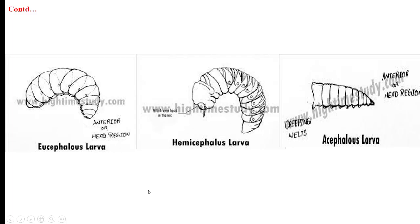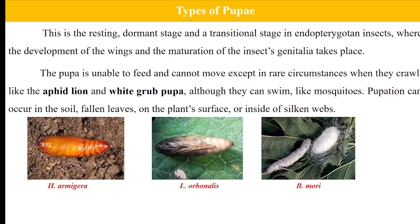In acephalous larvae, the mouth parts are represented by mouth hooks — for example, in case of true flies, that is house flies. You can see here the eucephalous type with a well-developed head capsule, the hemicephalous type with a partially developed head capsule, and the acephalous type where the head capsule is completely absent, with mouth parts represented by mouth hooks.